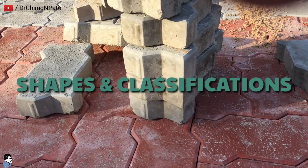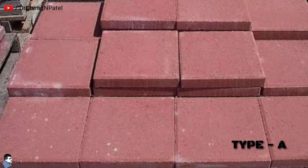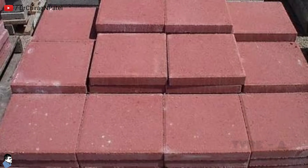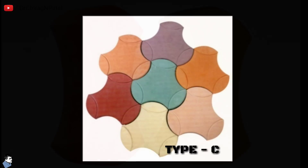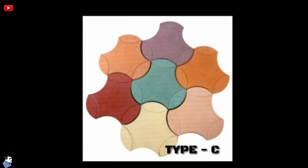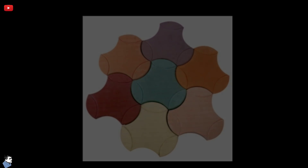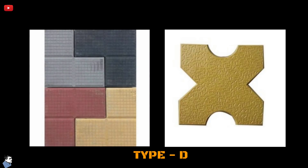Shapes and classifications: Type A — paver blocks with plain vertical faces which do not key into each other when paved in any pattern. Type B — paver blocks with alternating plain and curved or corrugated vertical faces which key into each other along all vertical faces when paved in any pattern. Type C — paver blocks having all faces curved or corrugated which key into each other along all vertical faces when paved in any pattern. Type D — P, L and X shape paver blocks which have all faces curved or corrugated and key into each other along all vertical faces when paved in any pattern.